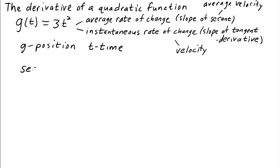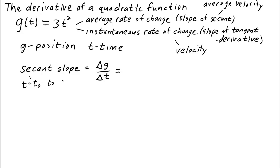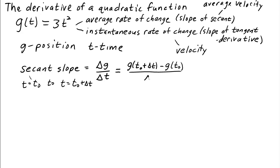The secant slope equals the change in the output g, or the change in position, divided by the change in the input t, or change in time. Let's calculate the slope from t equals t-naught to a later time t equals t-naught plus delta t. So delta g, the change in g, is g of (t-naught plus delta t) minus g of t-naught, all over delta t.